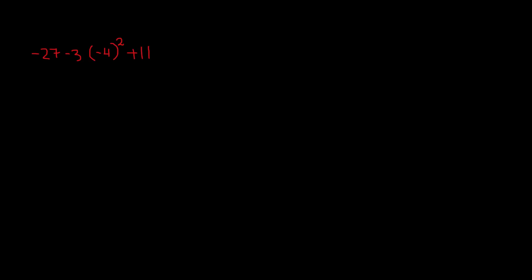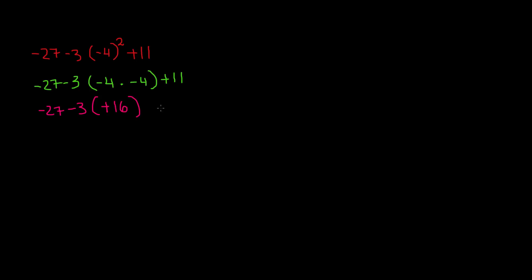This time we have exponents. But always remember that according to PEMDAS, parentheses comes first. We see that in parentheses we have negative 4, but there isn't really any other operation being applied to it. So we have to go to the next step, which is the exponent. The exponent is 2, so negative 4 is being squared. Negative 4 squared is the same as — bringing everything down: negative 27 minus 3, and then negative 4 times negative 4 — plus 11. A negative times a negative gives us a positive, so we get positive 16 plus 11.